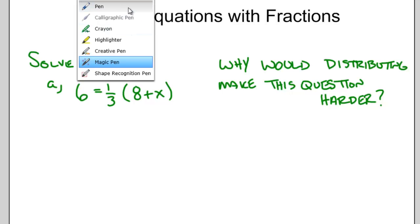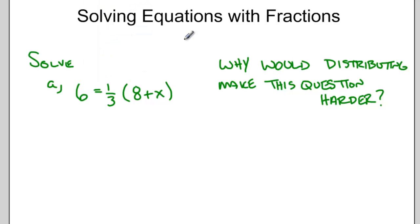So in this case, rather than distributing, it's going to be easier to do something called cross multiplying by the denominator by 3. So imagine taking that denominator of 3 and bringing it up, multiplying the 6 by 3. So we end up with 6 times 3 equals 8 plus x.